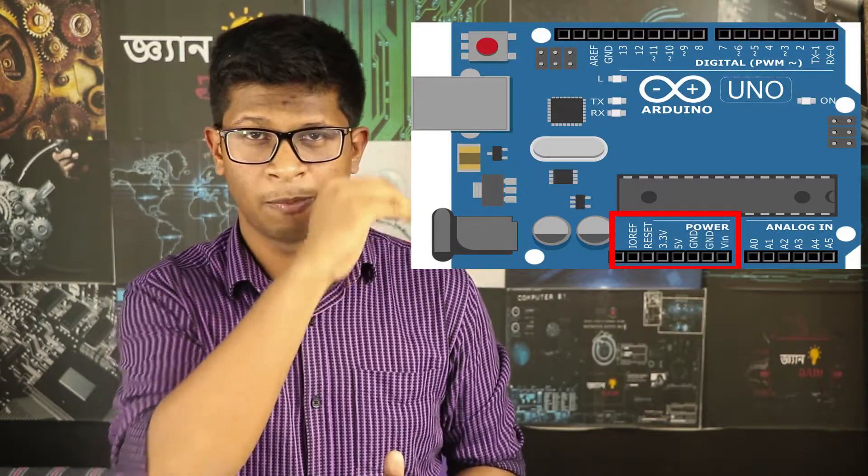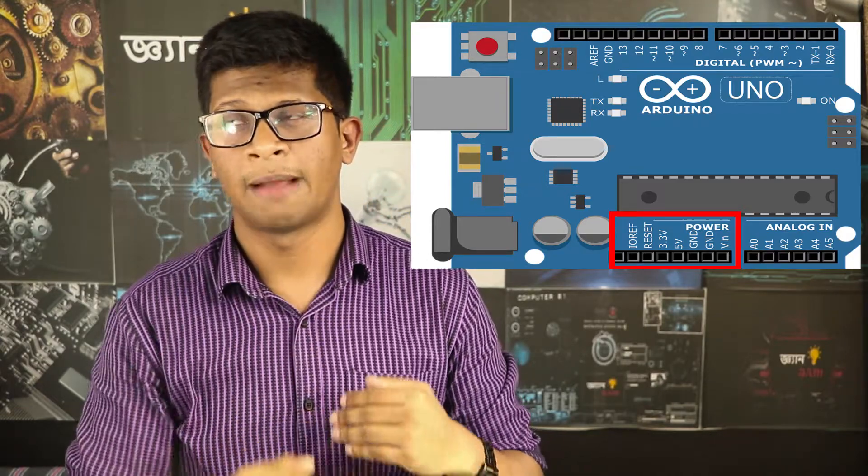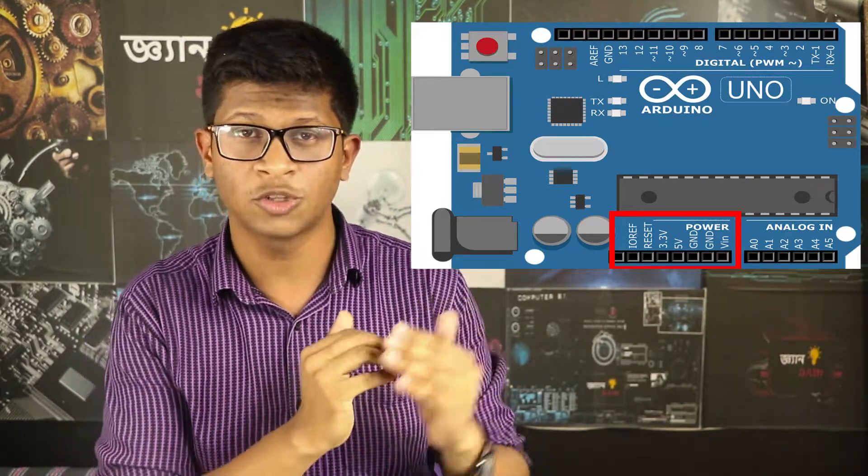The Arduino microcontroller needs power or electric voltage. We have 5V power. There are other options in the development board. Let's see. There is a power pin section with VIN, ground, 5V, and 3.3V. This is the power pin.